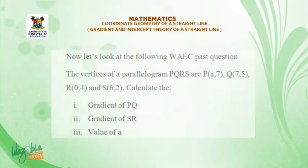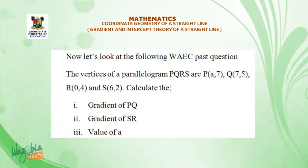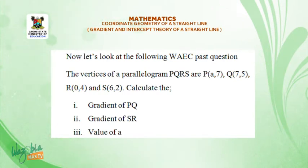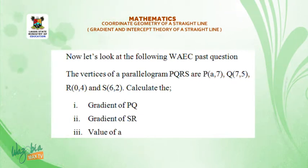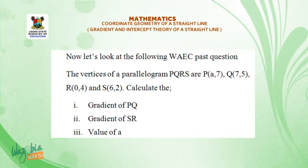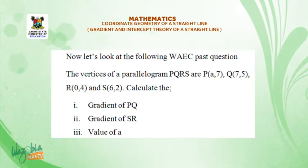Now let's look at the following WAEC past question. The vertices of a parallelogram P, Q, R, S are: P with coordinates (A, 7), Q with coordinates (7, 5), R with coordinates (0, 4), and S with coordinates (-6, 2). Calculate: (1) gradient of PQ, (2) gradient of SR, (3) value of A.